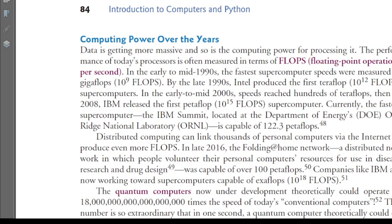Let's look at computing power over the years. Data is getting more massive and so is the computing power needed to process it. The performance of today's processors is measured in FLOPS — floating-point operations per second. In the early to mid-1990s, the fastest supercomputer speeds were measured in gigaflops — 10 to the power of 9 FLOPS.